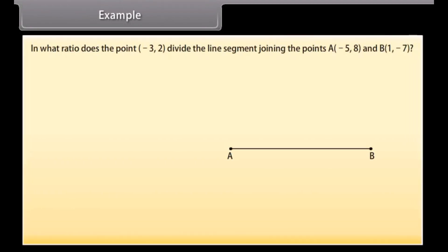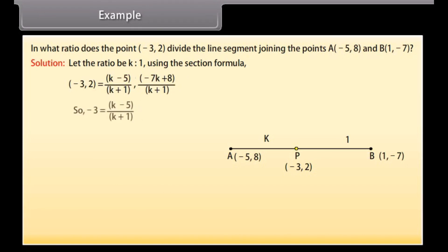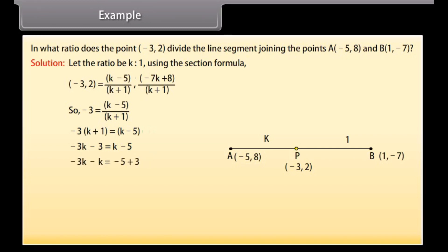Example: In what ratio does the point (minus 3, 2) divide the line segment joining the points A(minus 5, 8) and B(1, minus 7)? Solution: Let the ratio be K to 1. Using the section formula: minus 3 equals (K minus 5) divided by (K plus 1). So minus 3 times (K plus 1) equals K minus 5, which gives minus 3K minus 3 equals K minus 5. Therefore minus 4K equals minus 2, so K equals 1 by 2. The ratio is K to 1, which equals 1 to 2.